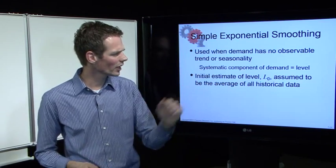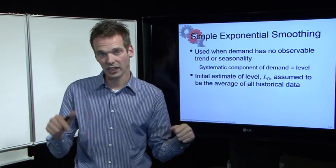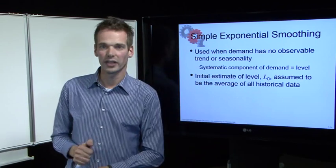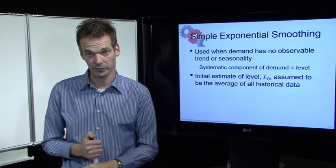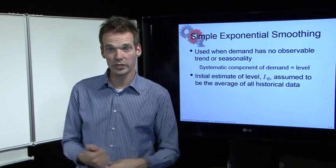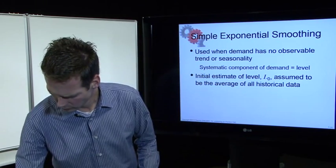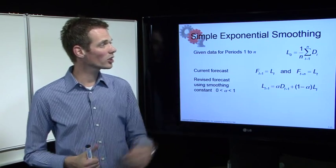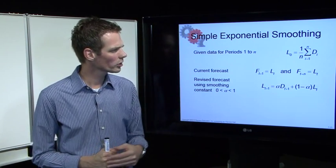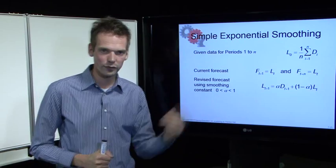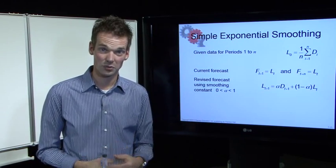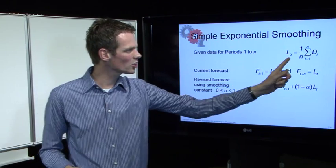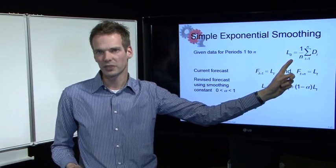The initial estimate for level — level 0 — is assumed to be the average of all historical data. The simple exponential smoothing works with three formulas. The first formula is used to establish the level for period 0.